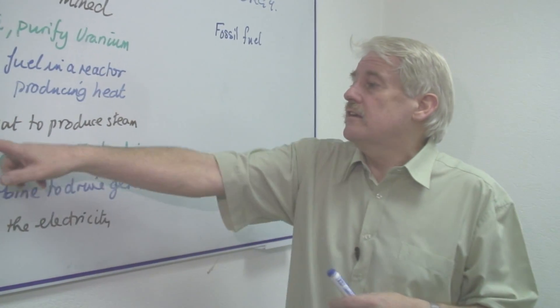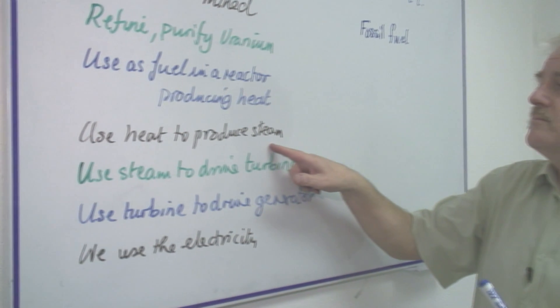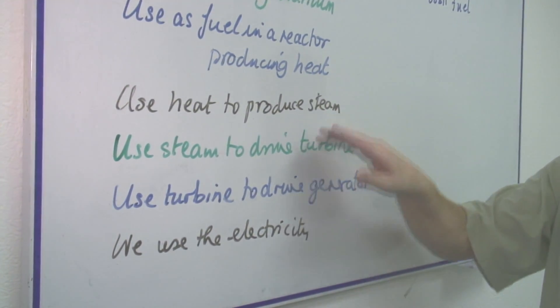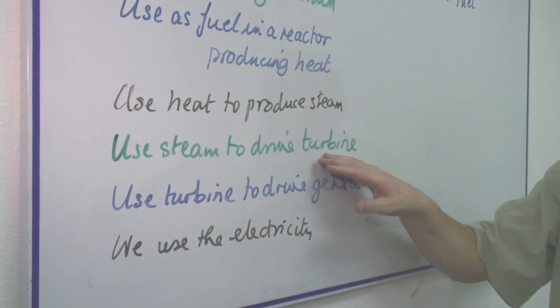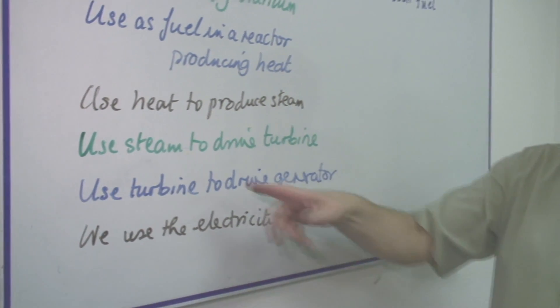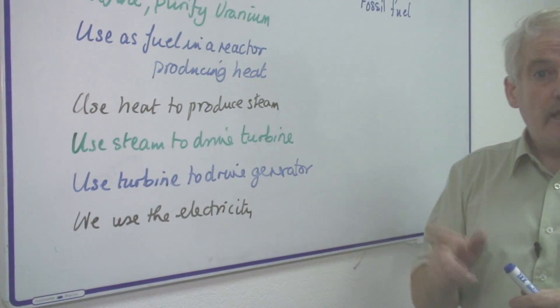The heat can then be used to produce steam. We then use the steam to drive a turbine, a steam turbine which rotates. The turbine then drives a generator.